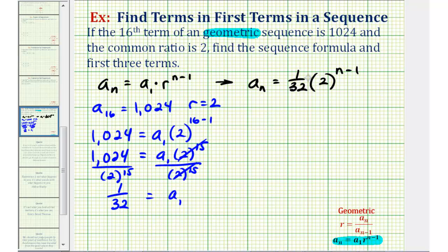Now I realize we could change the form of this, since 32 is equal to two to the fifth, but let's go ahead and leave it like this. So here's the sequence formula.